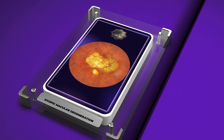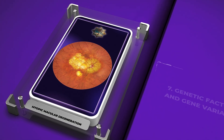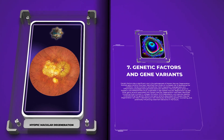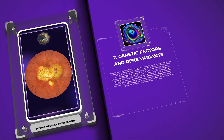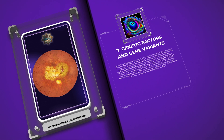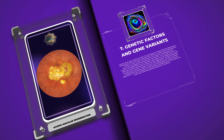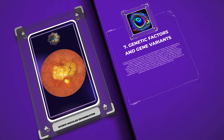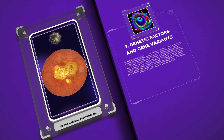Genetic factors play a significant role in the pathogenesis of myopic macular degeneration. Multiple gene variants have been identified that confer an increased risk of developing the condition. Genes involved in extracellular matrix regulation, angiogenesis, and inflammatory processes have garnered particular attention. One such gene variant is located in the ARMS2-HTRA1 locus, implicated in age-related macular degeneration as well. Other gene variants include those involved in collagen formation, ECM degradation, and vascular stability. Understanding these genetic factors can help in identifying at-risk individuals, facilitating genetic counseling, and potentially influencing treatment decisions.